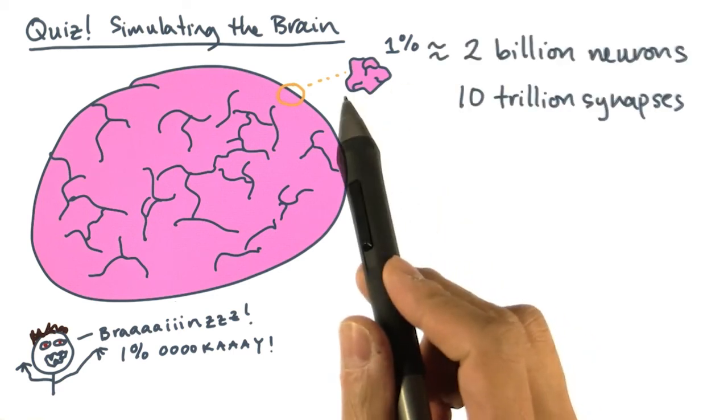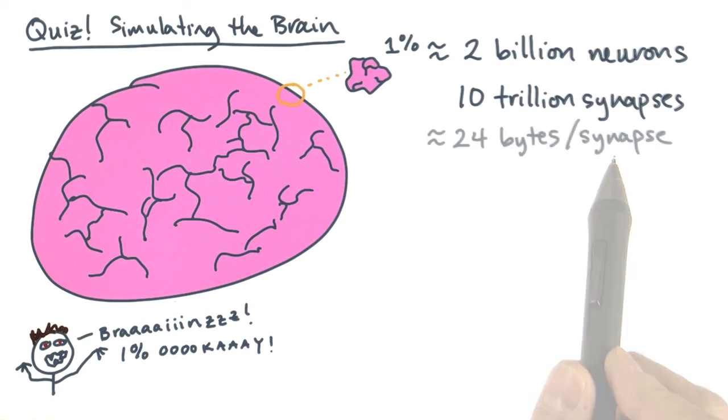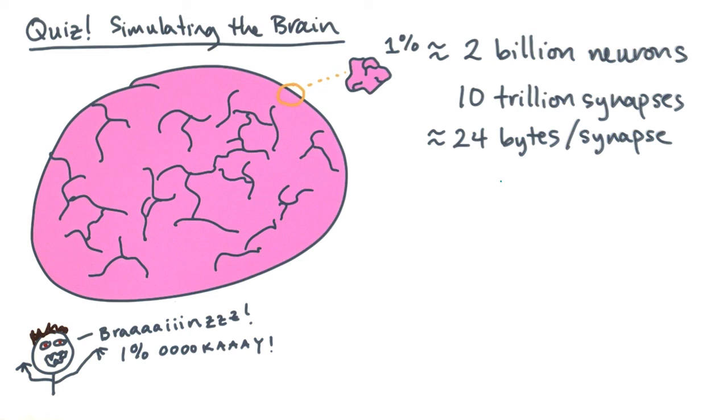Now, 1% of the brain is about 2 billion neurons and 10 trillion synapses. Every synapse required about 24 bytes of storage. I think you can imagine that 24 bytes times 10 trillion is a lot of bytes.